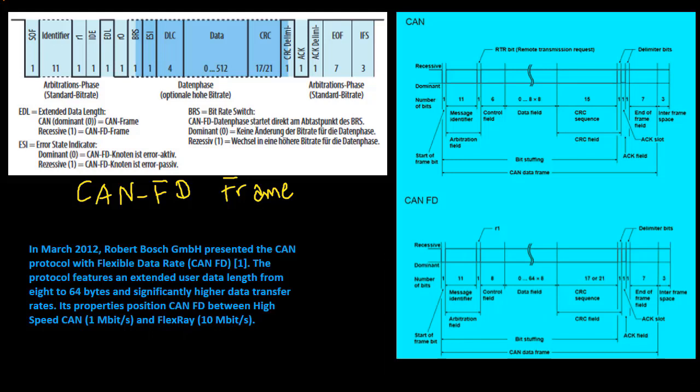In March 2012, Robert Bosch GmbH presented the CAN protocol with flexible data rate. The protocol features an extended user data length from 8 to 64 bytes and significantly higher data transfer rates. Its properties position CAN FD between high-speed CAN and FlexRay. CAN FD, FlexRay and other buses used in the automotive industry, we will see in later videos.